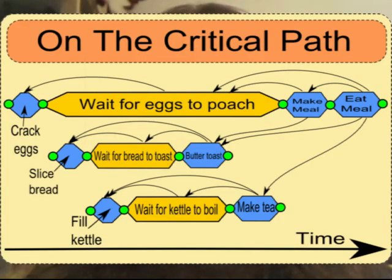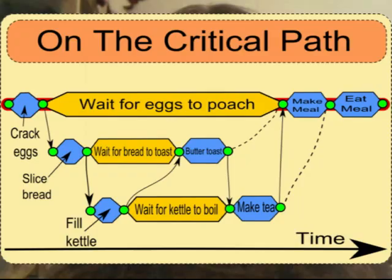The task scheduling diagram for this project initially looks something like this. The arrows indicate dependencies — later tasks are dependent upon the completion of earlier ones. Here is a diagram showing the critical path. Poaching the eggs is on the critical path, while toasting the bread and boiling the water are not. According to the diagram, the first thing one should do in the kitchen is crack open the eggs.